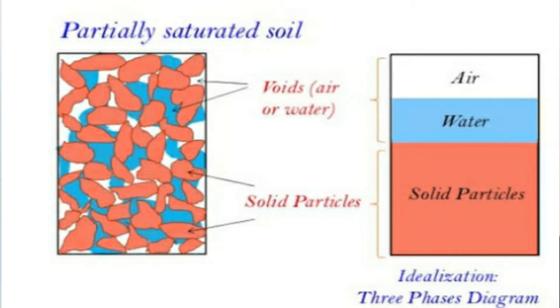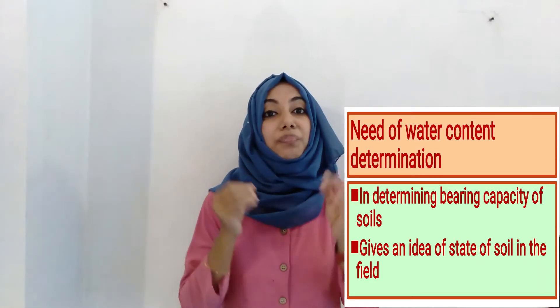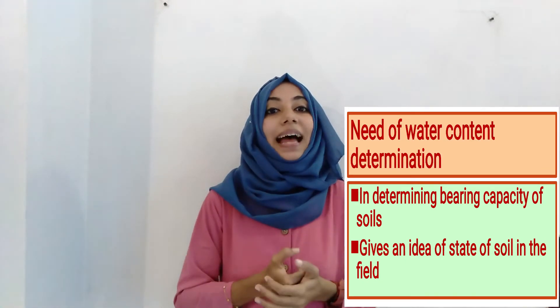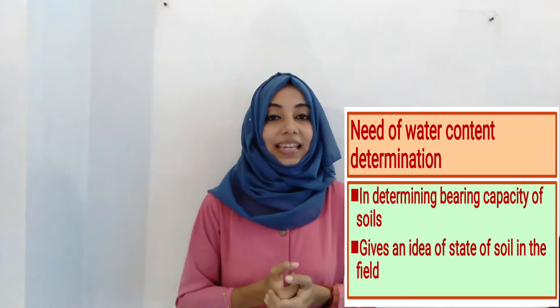We have already studied the three-phase system of soil. Soil has a three-phase system consisting of soil particles, air, and water. The void space between the soil particles is filled partly with air and partly with water. The engineering properties of the soil are strongly influenced by the amount of water present in it, so we necessarily calculate the water content, which is useful in determination of bearing capacity and settlement of soil.